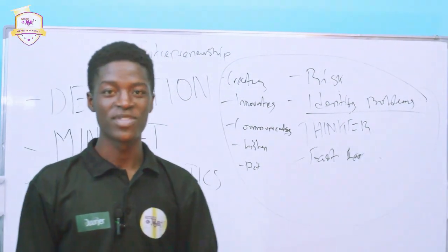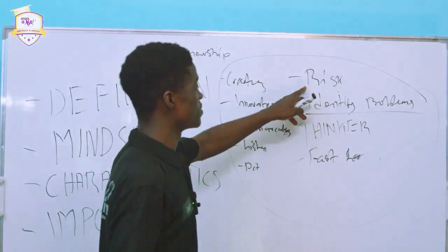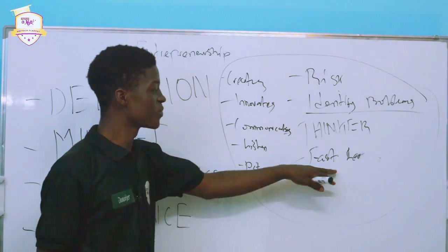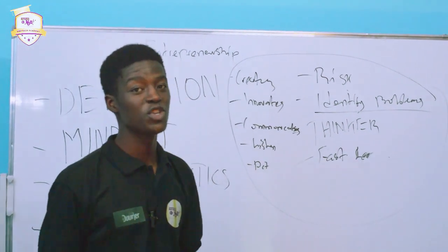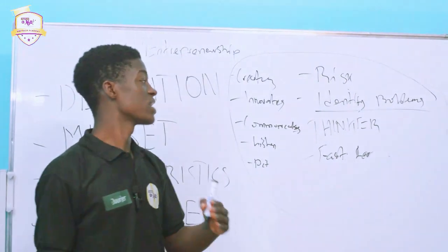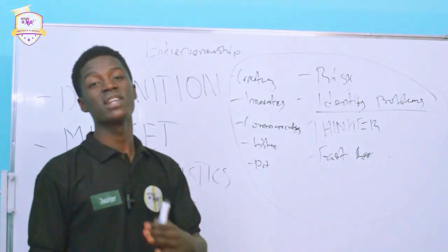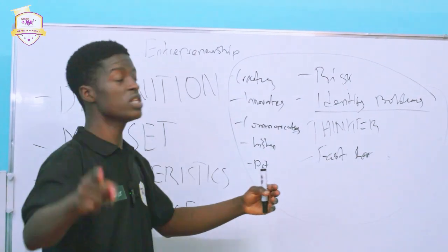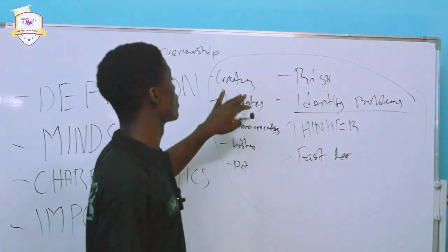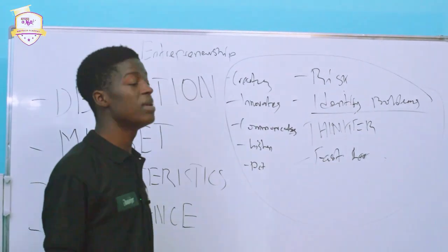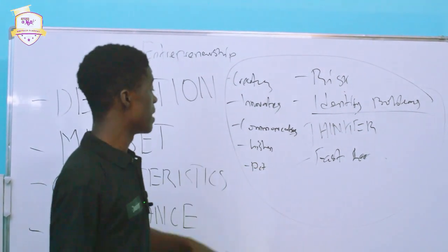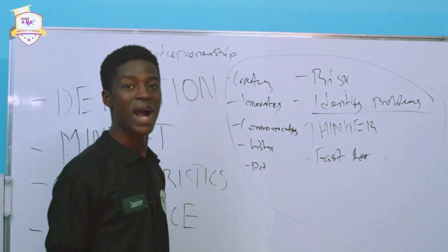What we are establishing here is that if you call yourself an entrepreneur, you must be a RICS taker, you identify problems, you think, you are a fast learner. Because as an entrepreneur, you face problems and your ability to solve them makes you defend what you go in for. Remember, an entrepreneur creates a business venture, so you need to be able to be a fast learner. It's not everything that you know — you need the ability to create, the ability to innovate, the ability to communicate, the ability to listen, and the ability to act.